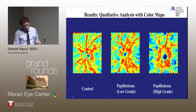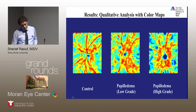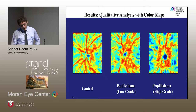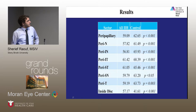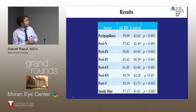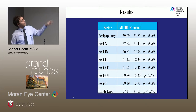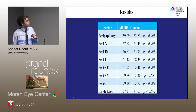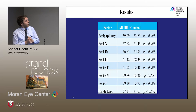Here are color-mapped representations of control and low- and high-grade papilledematous subjects. You can see subjectively that there are increased blue areas of non-perfusion in papilledematous subjects compared to controls. Looking at the perfusion density values, across all six sectors as well as the entire peripapillary region taken together, there is significantly increased perfusion for controls. The inside-disc region is notably the only one where patients show increased perfusion over controls, and we will discuss why that might be the case.